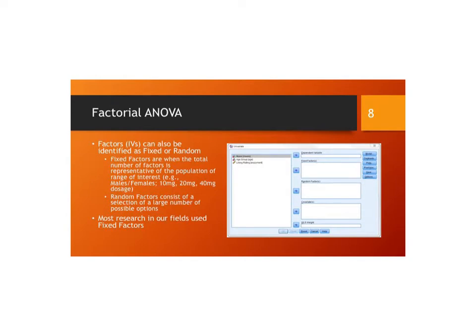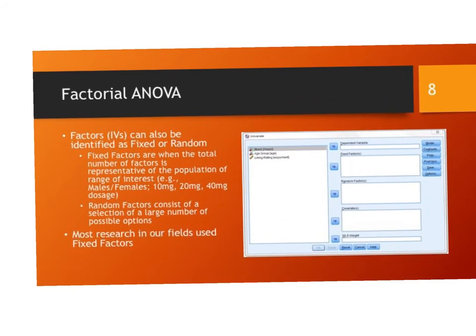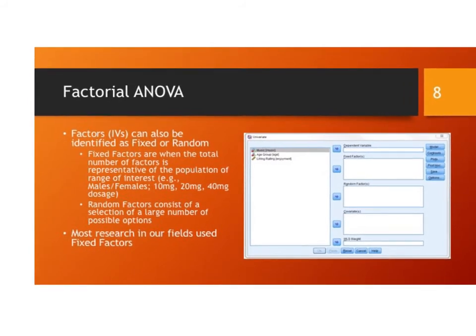Random factors consist of a selection of a large number of possible outcomes and can be employed in different types of disciplines. Most research that we'll see is going to come in fixed factors. So when we go to do our work in SPSS, we're going to enter our data into this fixed factors box when we go to enter our independent variables.